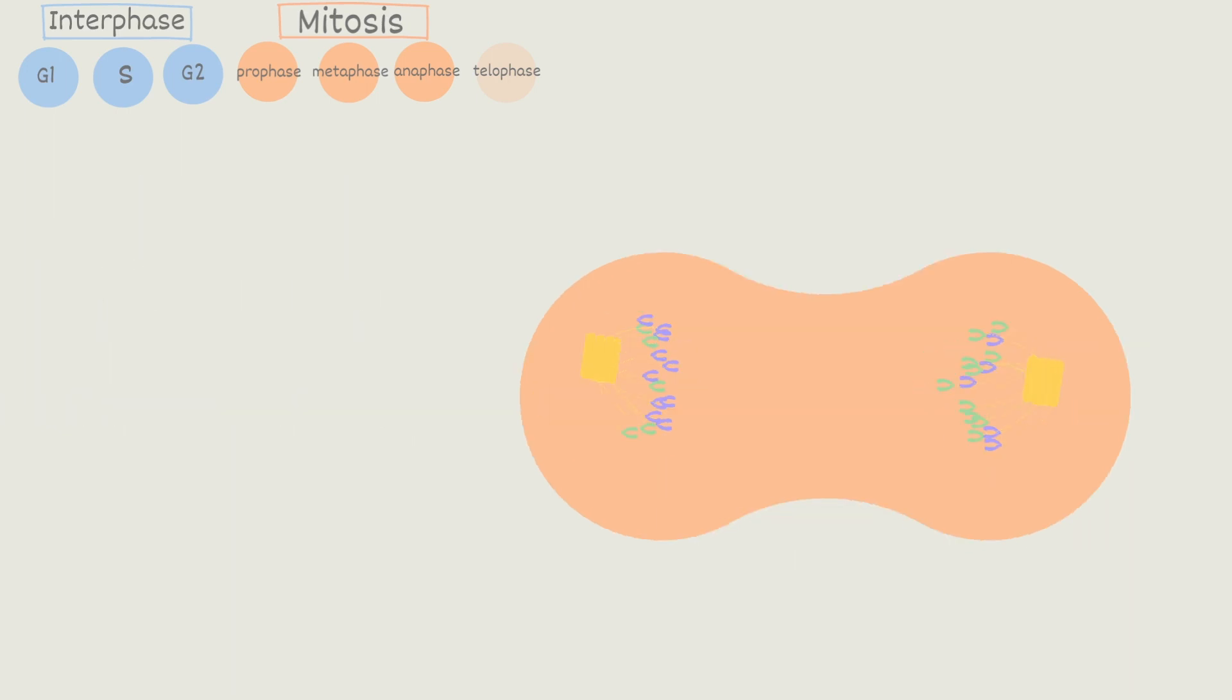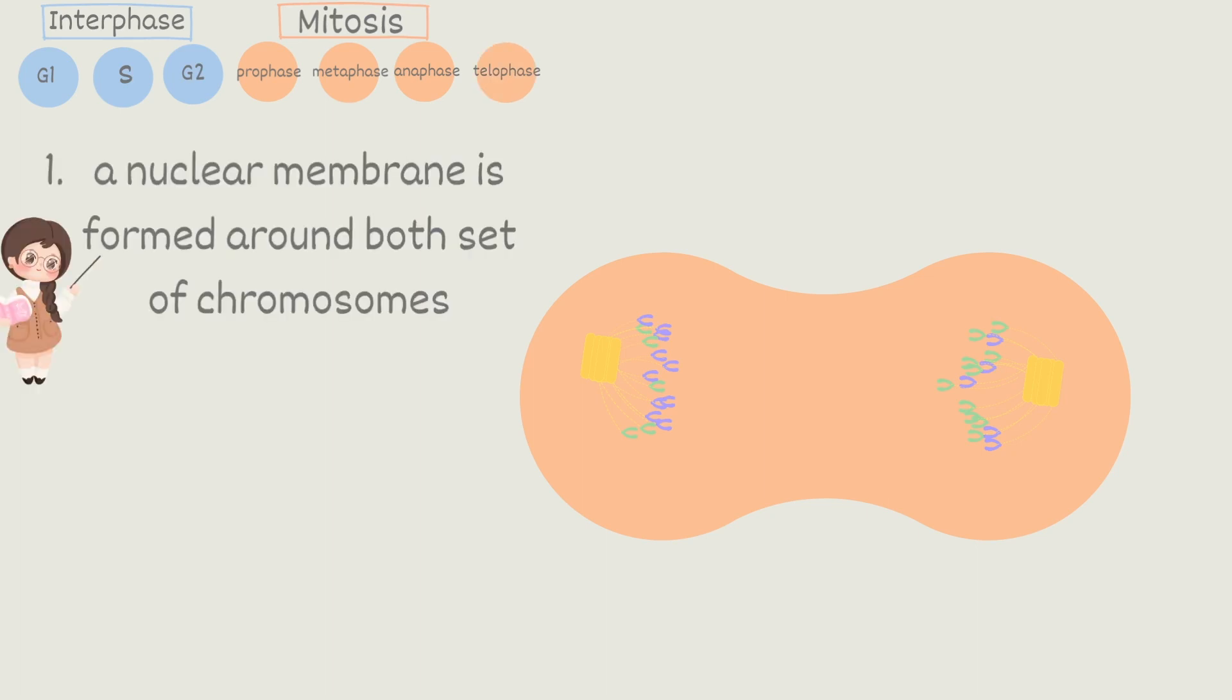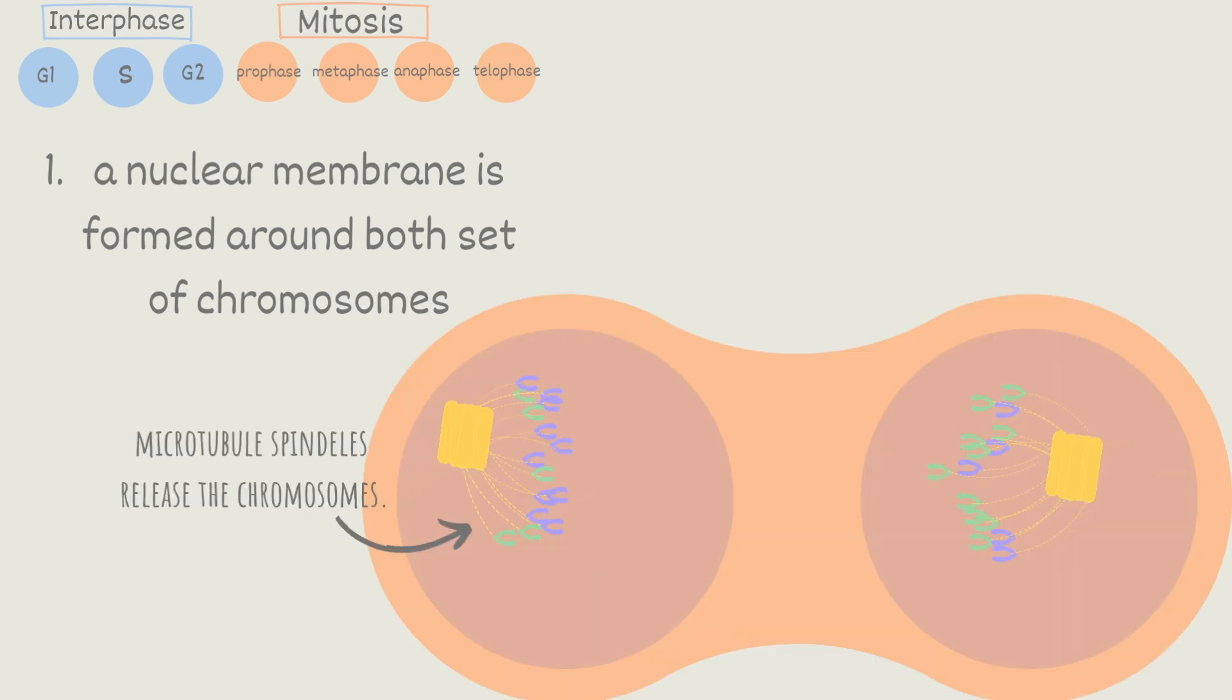The cell is now ready to enter telophase. First a nuclear envelope is formed around both sets of chromosomes. The microtubules release the chromosomes and the organelles begin to move into their proper place. So for example the centrosomes have no place in the nucleus. They shouldn't be there. So after releasing the chromosomes it leaves out of the nucleus and goes somewhere out there.